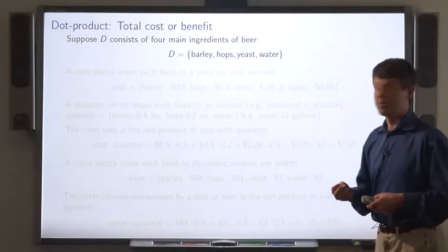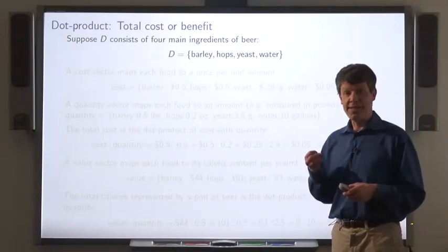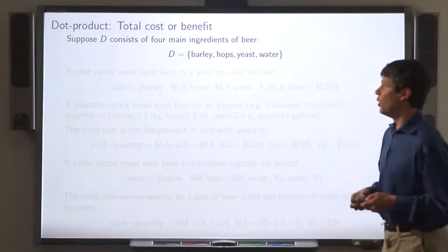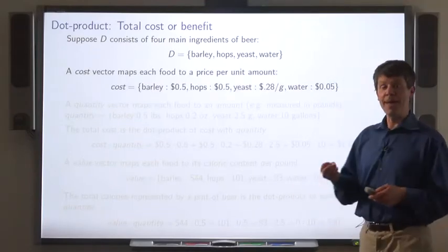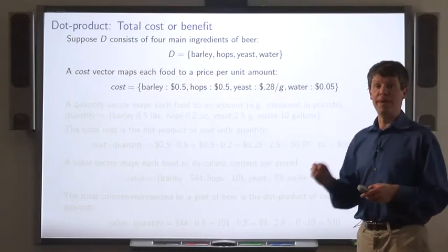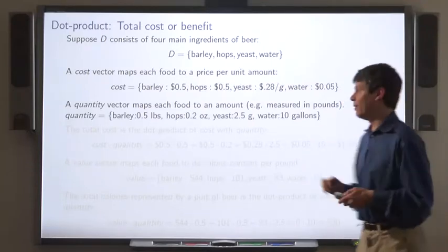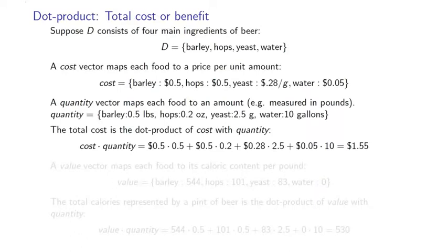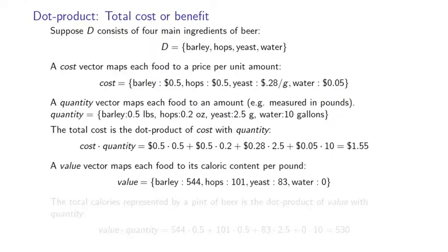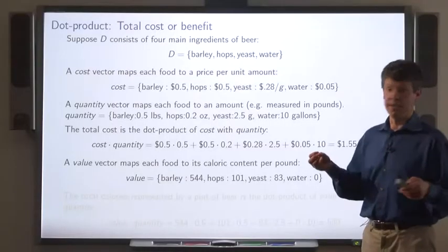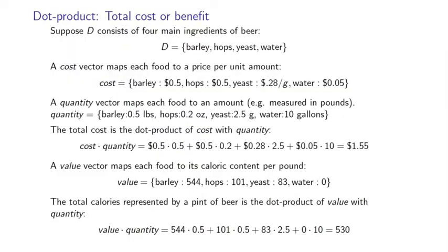Here's one use of dot products. Define D to be the set of the four main ingredients of beer. We can define a cost vector that maps each of those ingredients to the cost per unit amount of that ingredient, and a quantity vector that maps each of those ingredients to a quantity. Then the total cost is the dot product of the cost vector with the quantity vector. We can also define a value vector that maps each of the ingredients to say the caloric content. And then the total calories represented by a pint of beer is computed as the dot product of these two vectors.